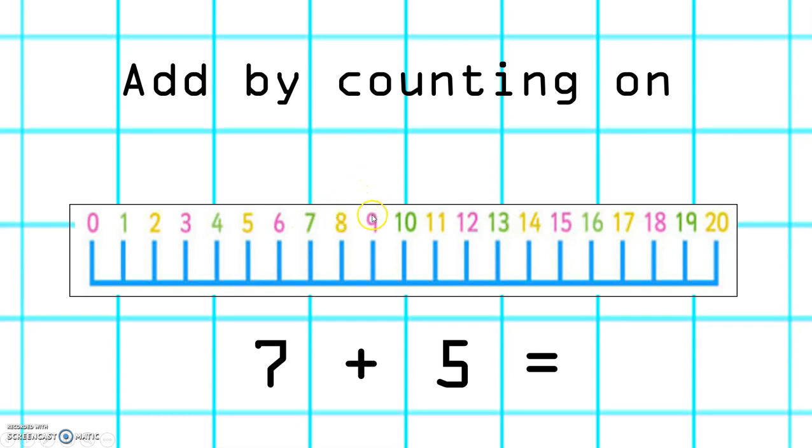1, 2, 3, 4, 5. The number that we land on is 12. So 7 add 5 equals 12.